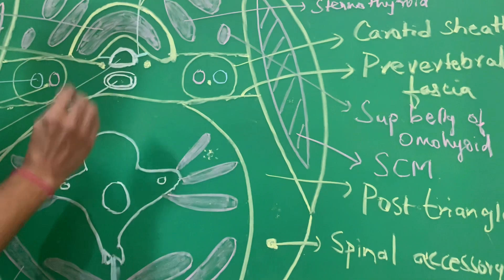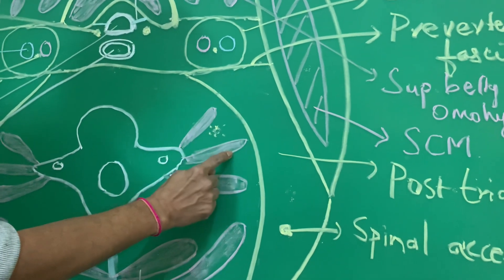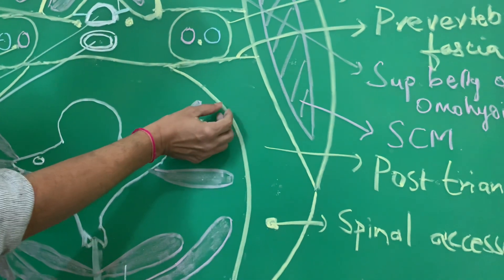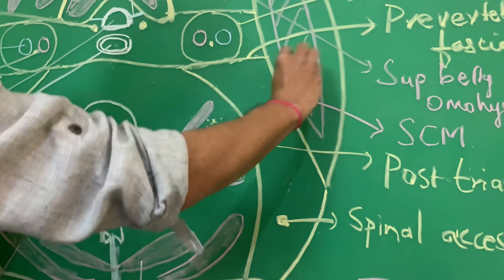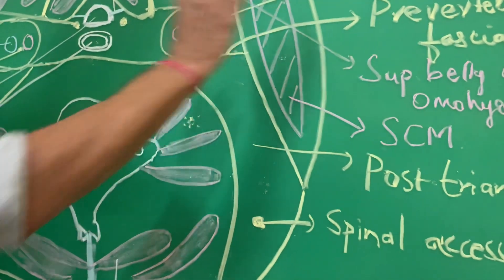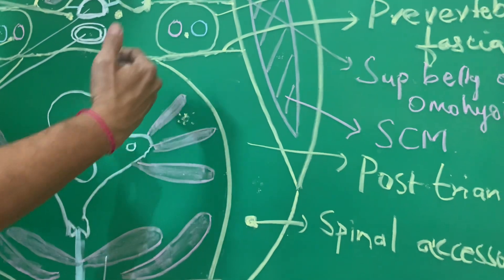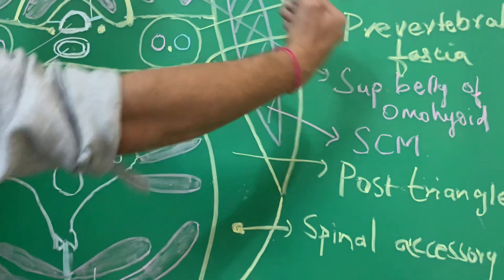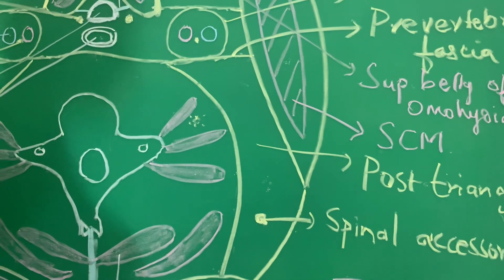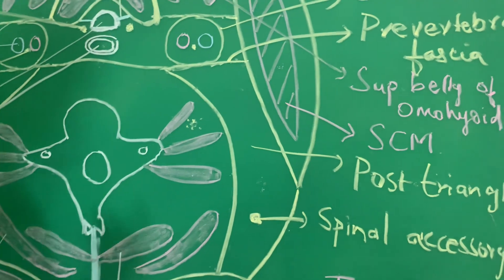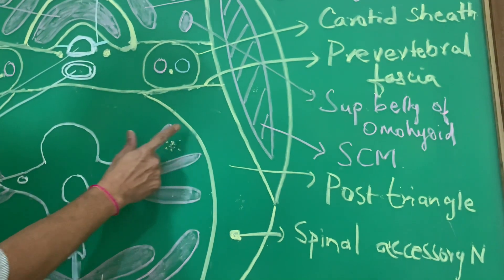Furthermore, this portion of the pre-vertebral fascia between scalenus anterior and scalenus medius muscle forms an elongation — it forms a tubular sheath around the subclavian artery, which passes towards the axilla. This tubular sheath is called the axillary sheath, derived from the pre-vertebral fascia.